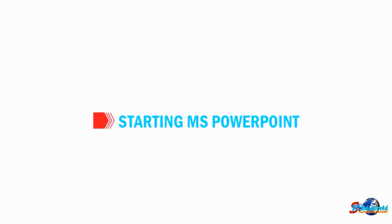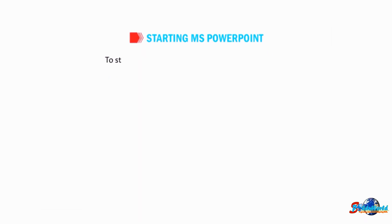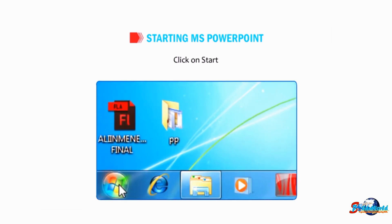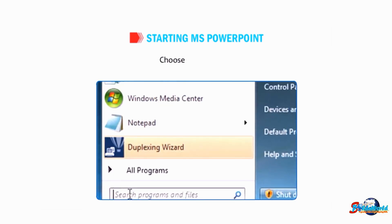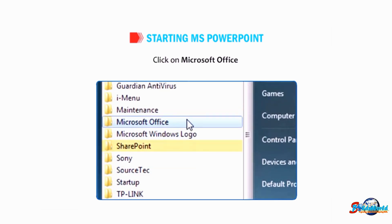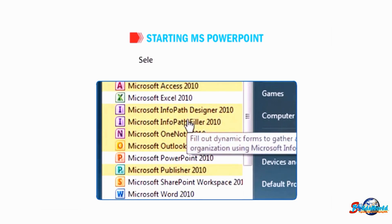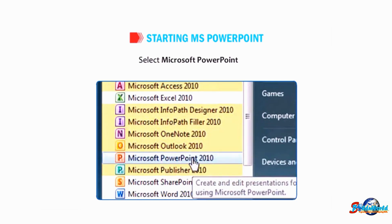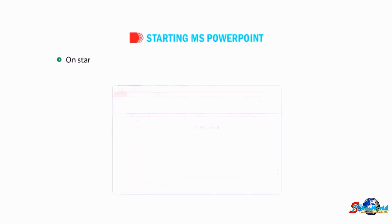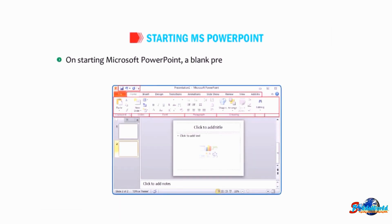Now let us understand how to start Microsoft PowerPoint. To start Microsoft PowerPoint, follow the given steps: number one, click on the Start button; number two, choose All Programs; number three, click on Microsoft Office; number four, select Microsoft PowerPoint 2010. On starting Microsoft PowerPoint, a blank presentation named Presentation1 appears on the screen.